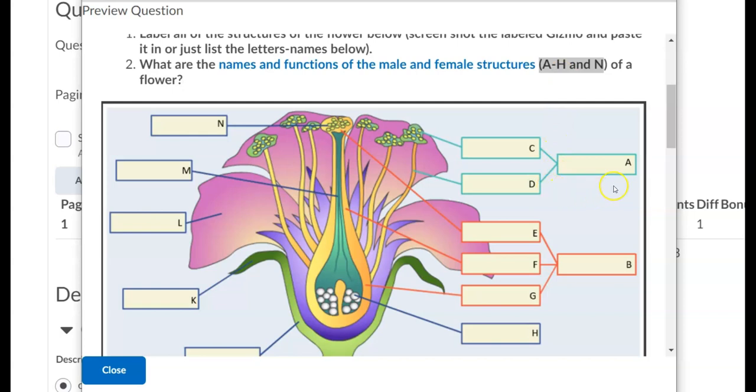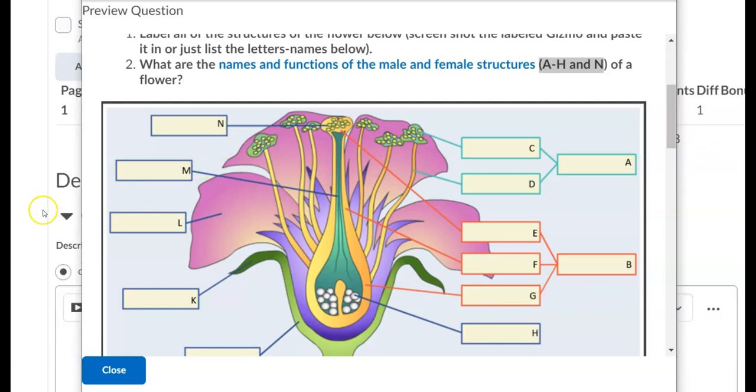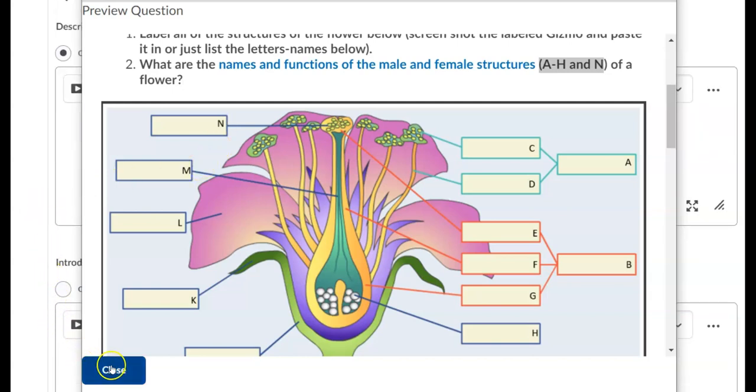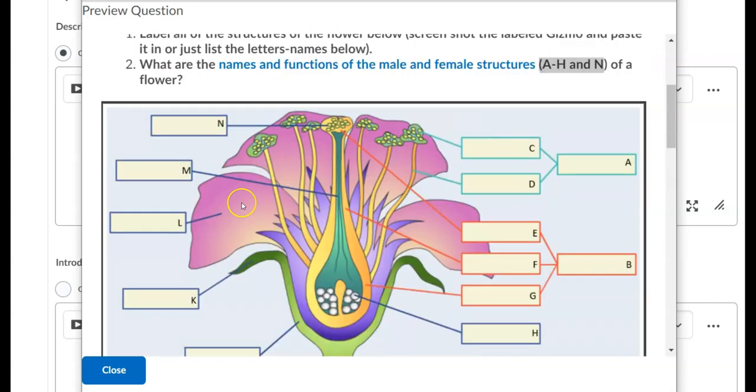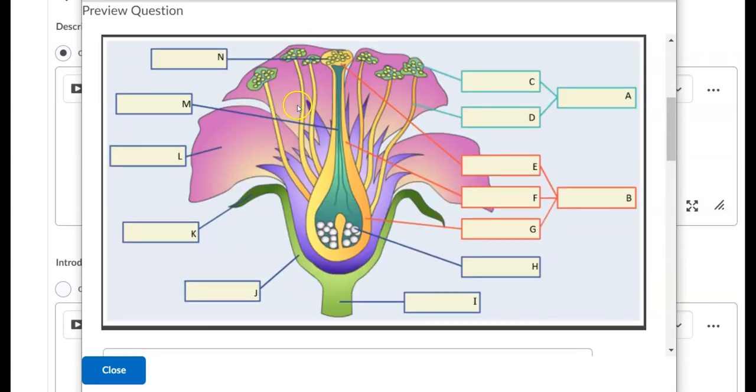So you can do A through H and N. So you only have to write about A, B, C, D, E, F, G, H, and N. You do have to label all the parts, right? So once you label them in the gizmo, you can grab a screenshot and just put that screenshot in here for your CRQ. Or list all the parts. Make sure you put the right letter with the right part. And then when you write about the parts, you only have to write about A through H and letter N.